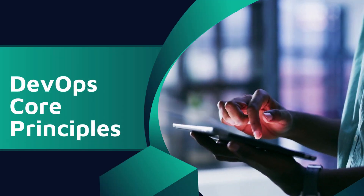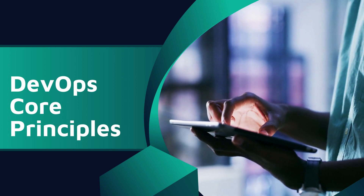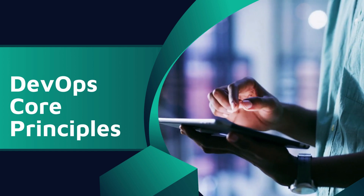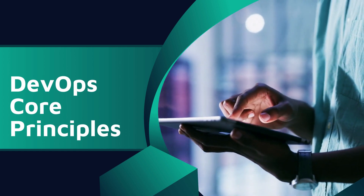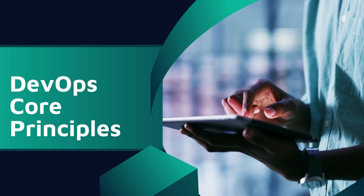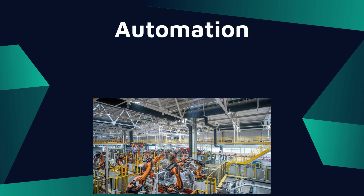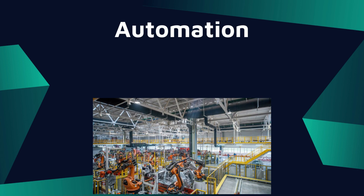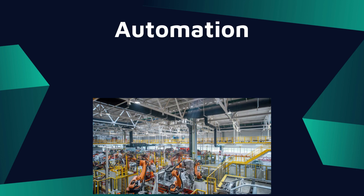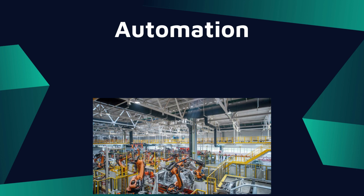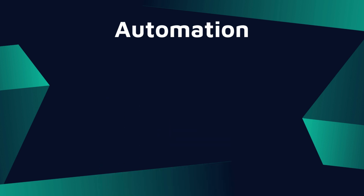Now let's talk about the key principles of DevOps. We need these key principles because they help us enhance efficiency, agility, and quality. The first key principle is Automation. Automation helps shorten the software development lifecycle — our very definition of DevOps says it is a set of tools and practices that help shorten the lifecycle. With automation we can automate repeated tasks which we would normally perform manually.